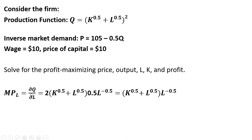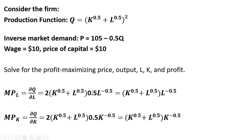First, I'm going to get the marginal product of labor. We take the partial derivative of the production function with respect to L. We bring the 2 down in front, subtract 1 from that exponent, and then take the derivative of L to the 0.5 power, giving us 0.5L to the minus 0.5. The 0.5 times 2 cancels, and we're left with the result. Taking the partial derivative with respect to capital gives a similar looking result.